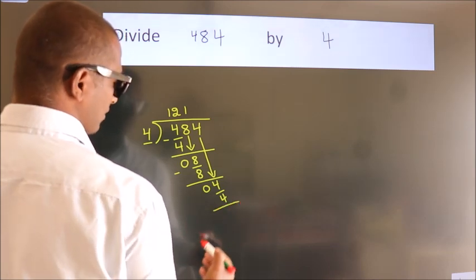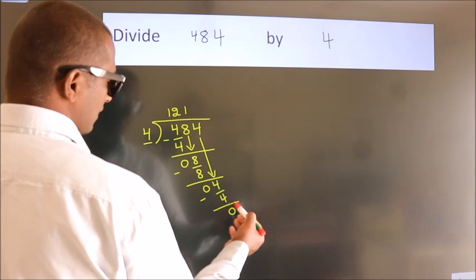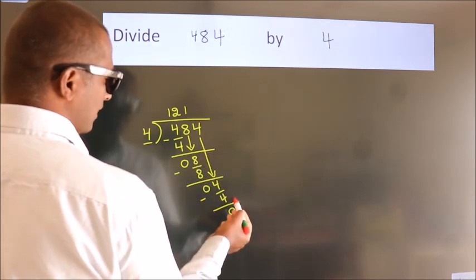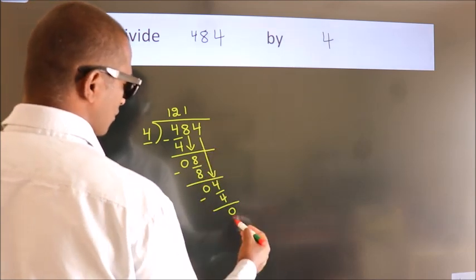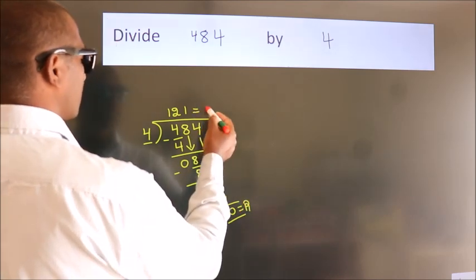Now we subtract. We get 0. After this, no more numbers to bring it down. So we stop here. This is our remainder. This is our quotient.